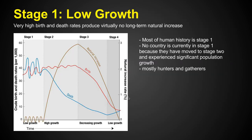Stage 1 is characterized by low growth. We have a very high birth rate but also a high death rate, which doesn't produce any long-term natural increase. This reflects way back in human history — before medicines, technologies, or reliable food production. People had lots of babies because there was virtually no birth control, but people died because there were no hospitals or medicines. Most of human history up to about the 1800s was in this stage. No country currently remains in Stage 1.